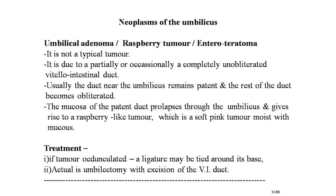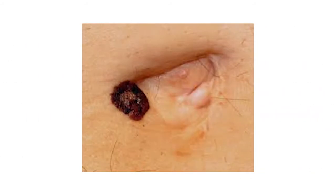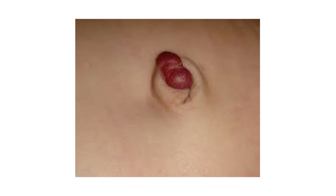Treatment of omphalitis: 0.1 percent chlorhexidine application daily to the stump, antibiotics as needed, and surgical treatment by umbilectomy. The next topic is neoplasms of the umbilicus. Umbilical adenoma, raspberry tumor, or enteroteratoma are the same entity — not a true tumor. It results from a partially or completely unobliterated vitello-intestinal duct near the umbilicus, where the mucosa prolapses through the umbilicus forming a soft, pink, moist, mucus-covered raspberry-like tumor. Treatment is umbilectomy with excision of the vitello-intestinal duct.